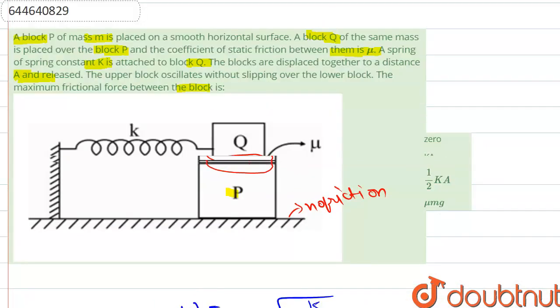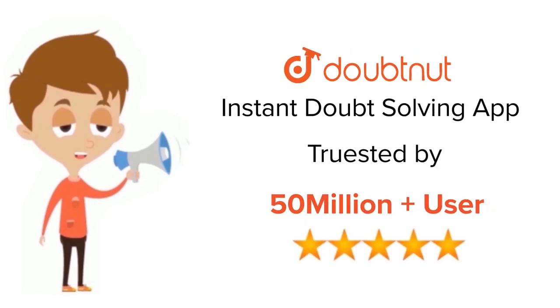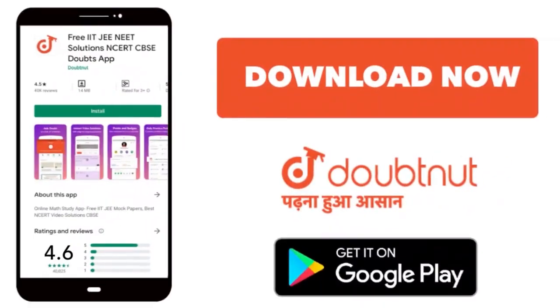So in this question, option C is the correct option. Thank you. For class 6th to 12th, up to IIT-JEE and NEET level, trusted by more than 5 crore students, download Doubtnet app today.